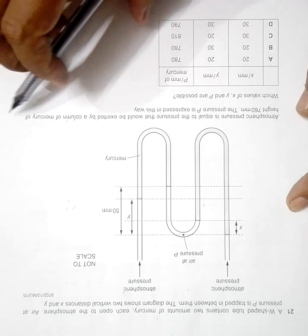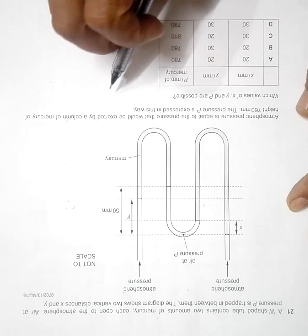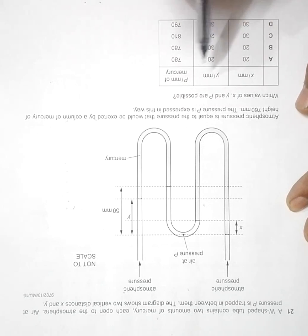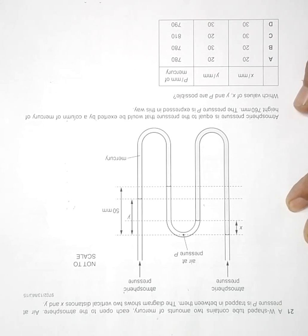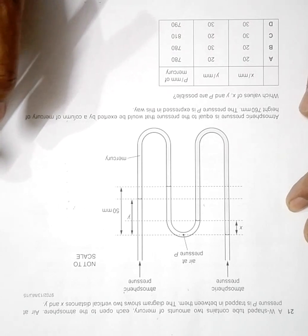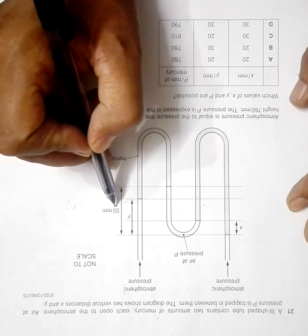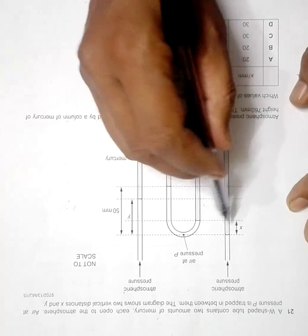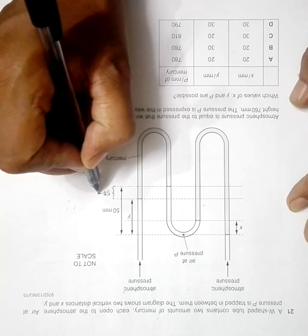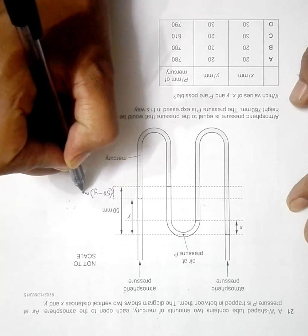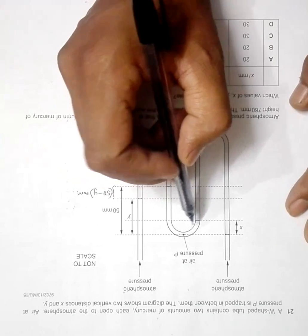The atmospheric pressure is equal to the pressure exerted by a column of mercury of a given height. Pressure P is expressed in these terms, involving x, y, and P across all columns. We need to find which values of x, y, and P are possible. The distances shown are 50 mm, y, and x — so this small distance is 50 minus y millimeters.